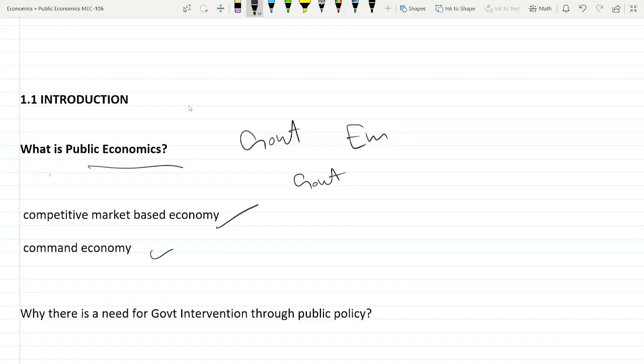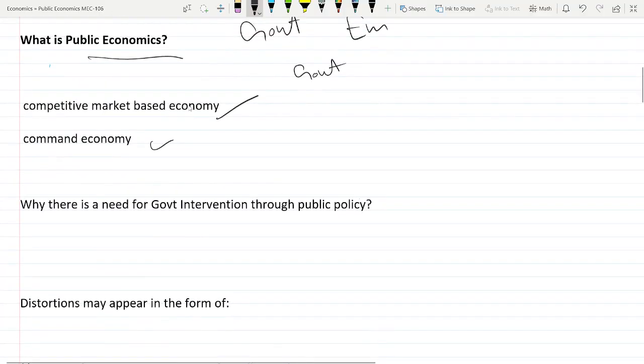In competitive economy it will be minimum and in a command economy government tries to control each and everything. But government intervention will be there. So why there is the need for government intervention through public policies we will learn that.